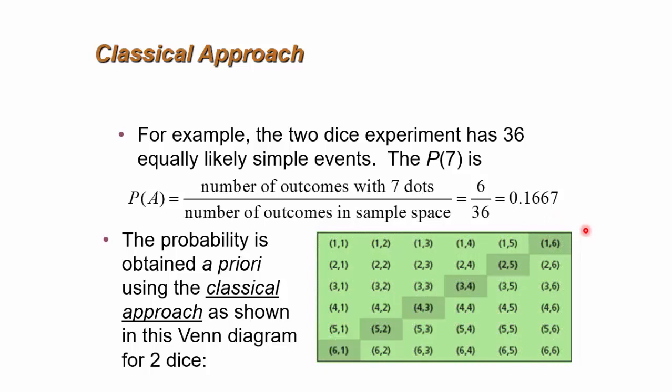Because one could easily construct the entire sample space of rolling two dice and find out the probabilities for any of the combinations that may be required, as shown in the Venn diagram here.